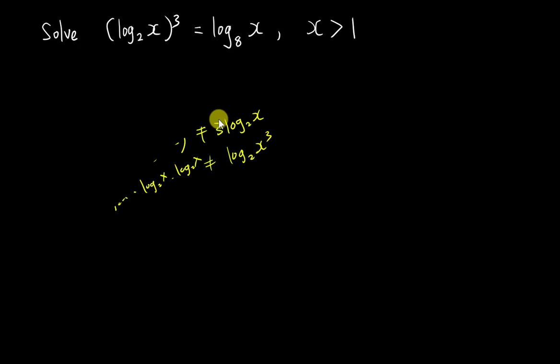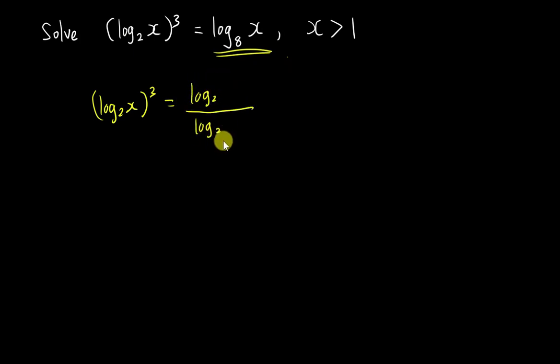Then the next thing I will do is, since I can't touch anything on this side, I will just leave it there. I will just leave it as (log₂x)³. But I can do something on this side because it's not the same power. Then I will change this log₈ to log₂, base 2.